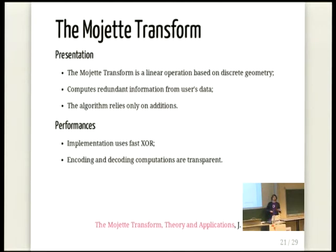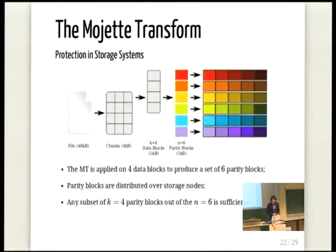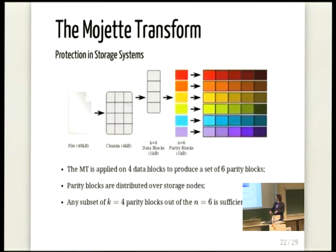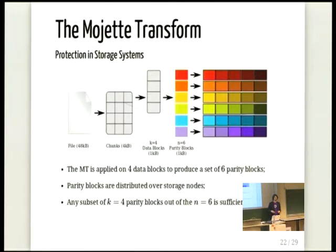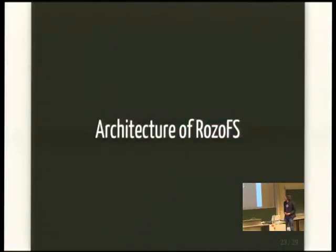Here is how it works. We take the file, we cut it into chunks of data, and these chunks are then encoded. And if any two of my nodes fail, I'm able to reconstruct the original data.